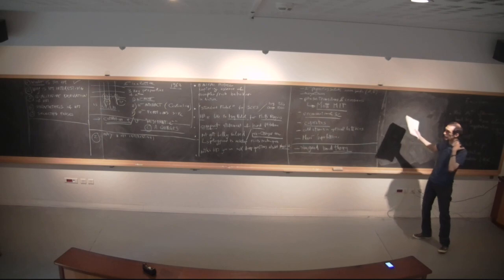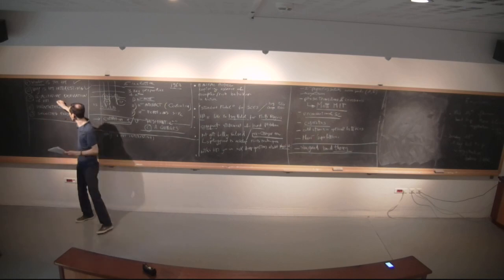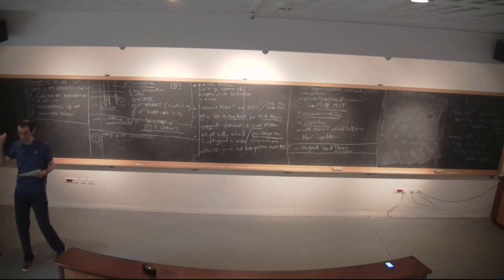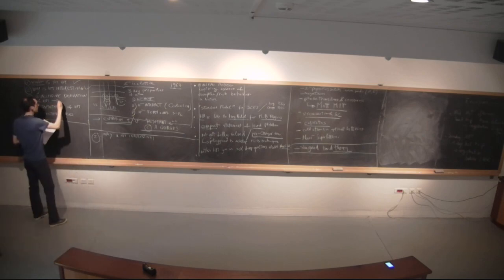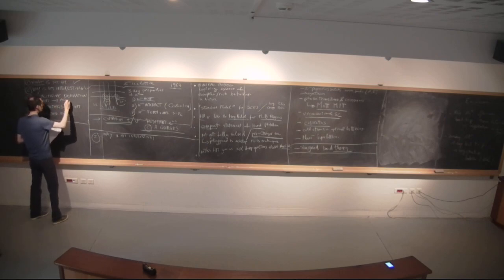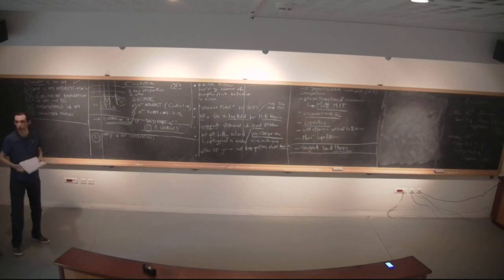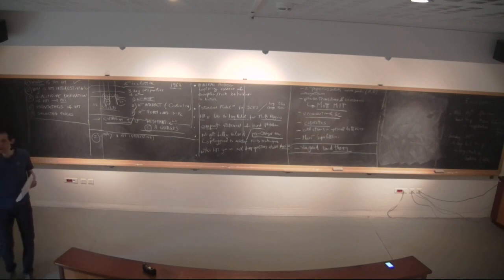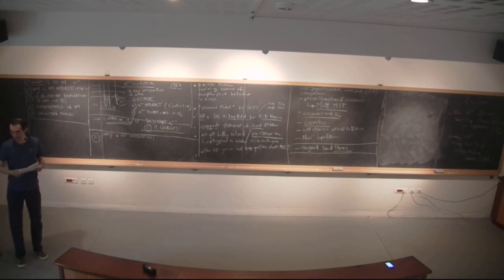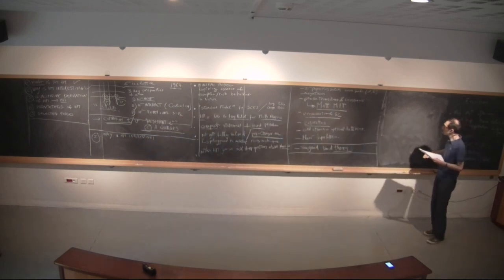This also allows me to introduce the next topic: the qualitative derivation of the Hubbard model. I'm going to follow the original articles by Hubbard — a series of three articles in the Proceedings of the Royal Society in London in 1963 and 1964. I really recommend reading these papers; they are beautiful. If you go there, you will not see the Hubbard view — you will see the Hubbard eye.